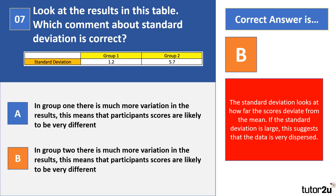In group two we've got a standard deviation of 5.7. Standard deviation looks at how far the scores deviate from the mean. If the standard deviation is large, this suggests that the data is very dispersed. For example, if every individual in group one scores 10, the standard deviation will be zero, meaning all scores are the same. The larger the standard deviation, the more variability there's going to be in your data set. When comparing standard deviations, the larger value indicates more variation and the smaller value indicates less variation.